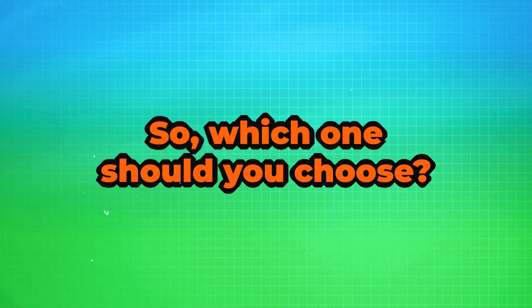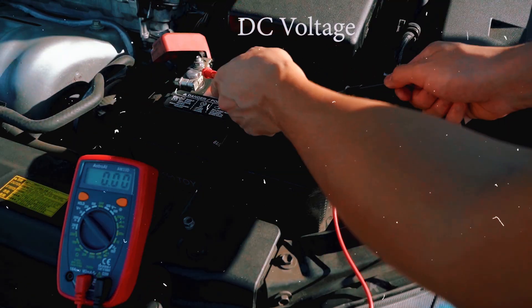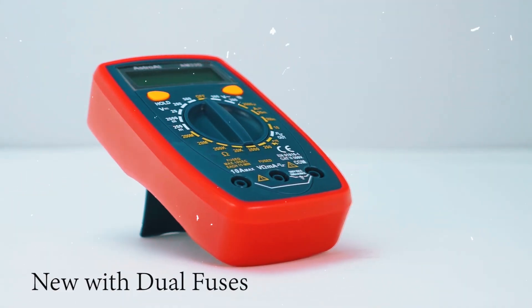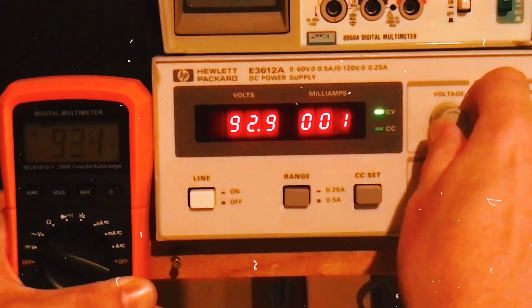So, which one should you choose? If you want precision, versatility, and a user-friendly interface, then a digital multimeter is the better option. It's great for most general work, and it's easy to get accurate readings quickly.